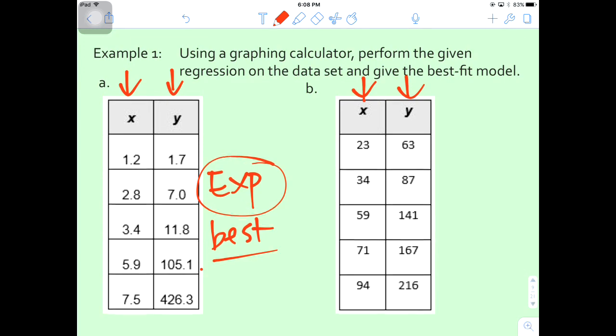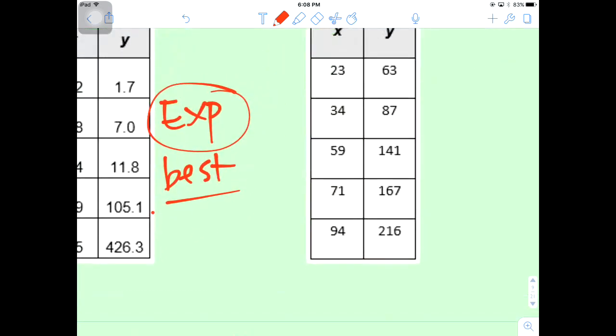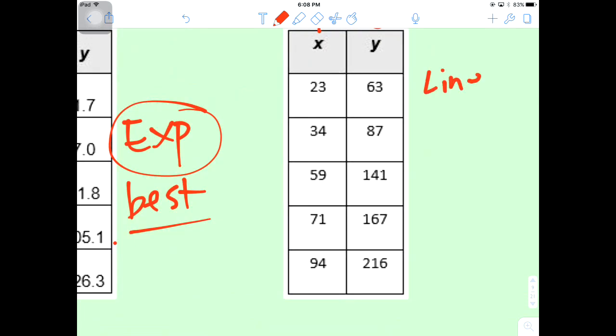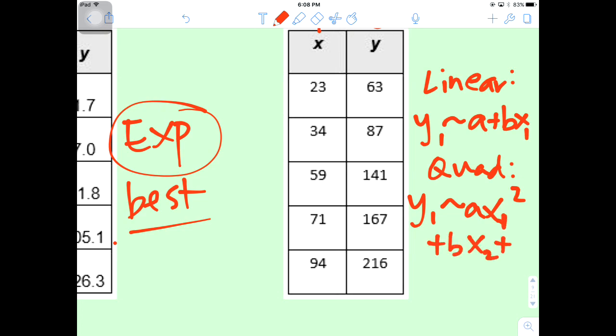I want you guys to generate the equations. For linear, you're going to go y1 approximate a plus bx1. Then for the quadratic, you're going to use y1 approximate ax1 squared plus bx2 plus c. And then the exponential one we already know from before, it should be y1 approximate ab to the x1. So those are the three equations you're going to enter. I'm going to have you pause it here and go ahead and try this. Enter the two set of data and then generate it by the computer and tell me which one is the best fit. I'm going to tell you the answer right now but don't look at this until you try it yourself.